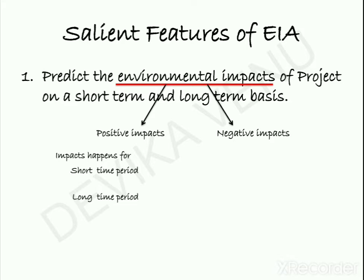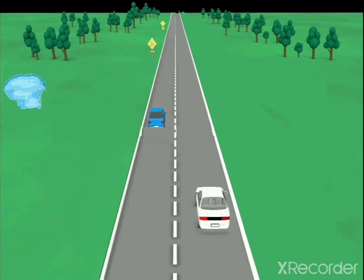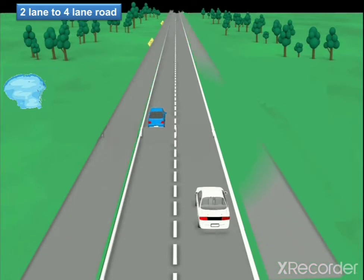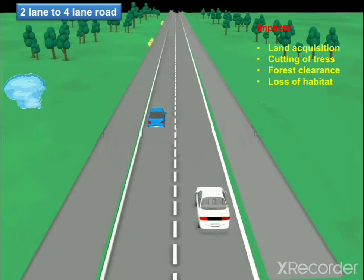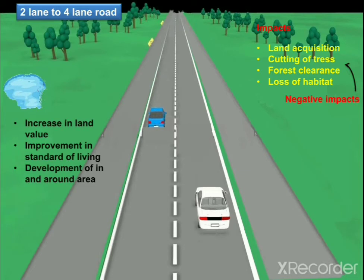These keywords can be explained with the help of an example. Here I will take a road development project — the expansion of a two-lane road to a four-lane road. The impacts associated with this activity include land acquisition, cutting down of trees, forest clearance, and loss of habitat. These can be grouped under negative impacts, whereas increase in land value, improvement in standard of living, and development of the surrounding area can be grouped under positive impacts.